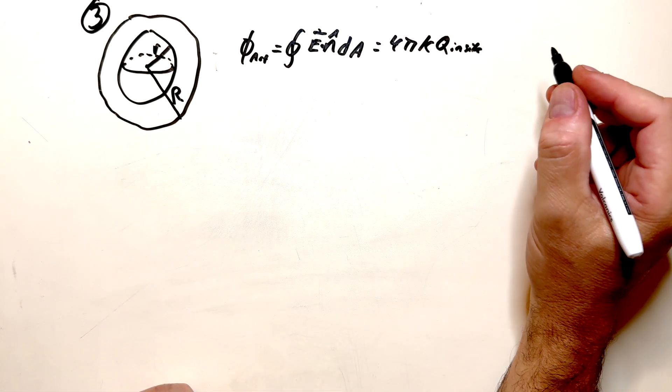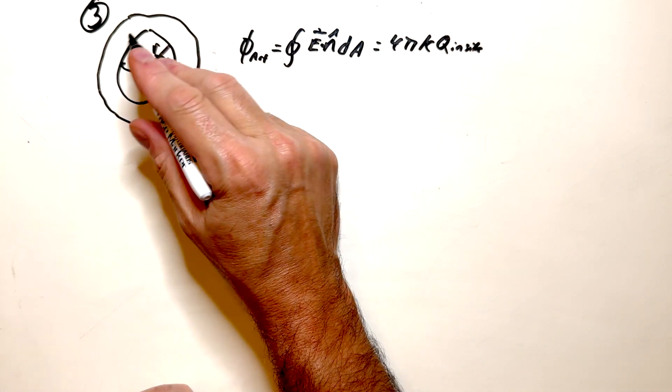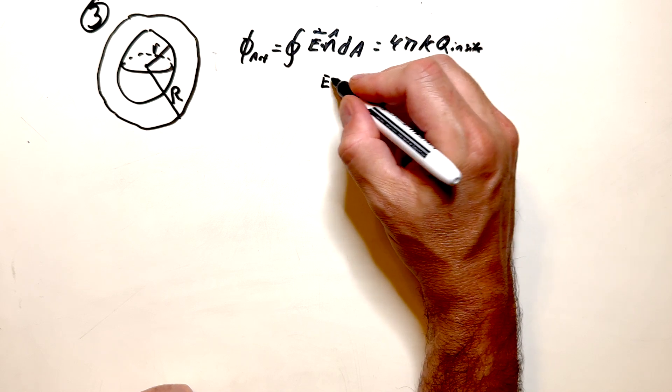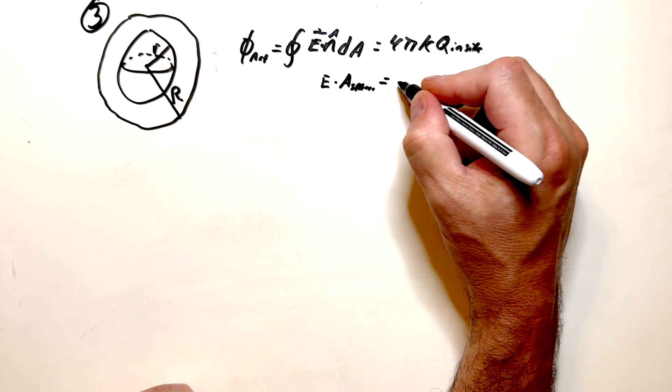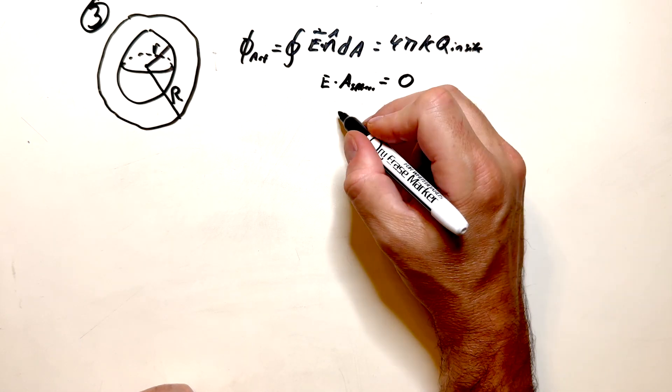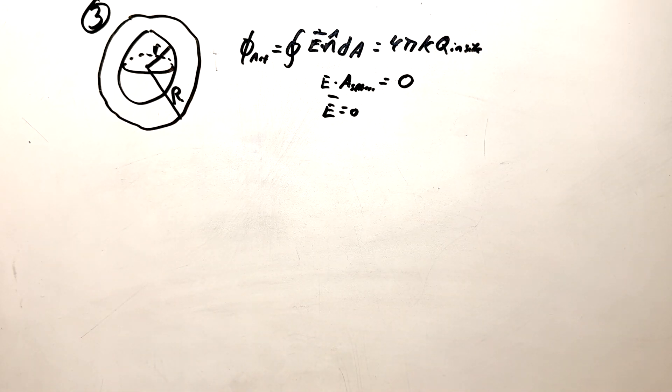Well, what is q inside? Q inside is zero. Because the charge is all on the surface of the sphere. So this is going to give me that E dot A of a sphere is equal to zero, which means that E is equal to zero. So the electric field inside that sphere is equal to zero. That's all there was to that one.